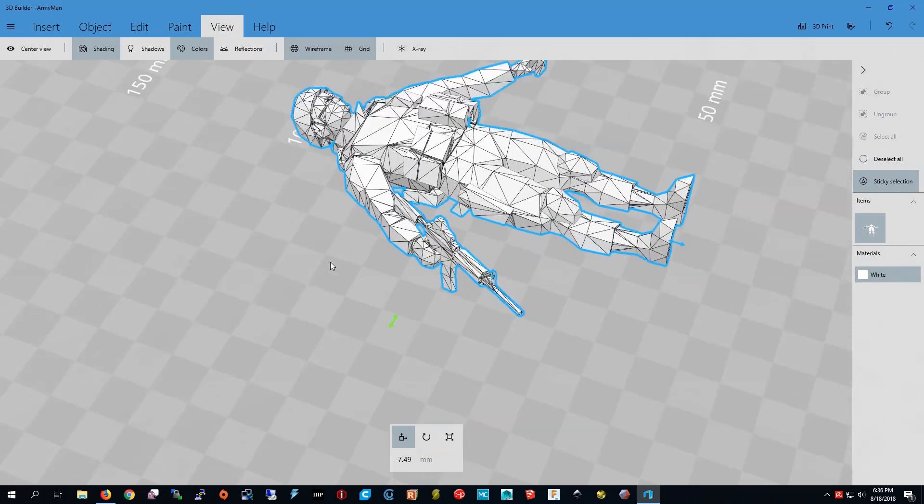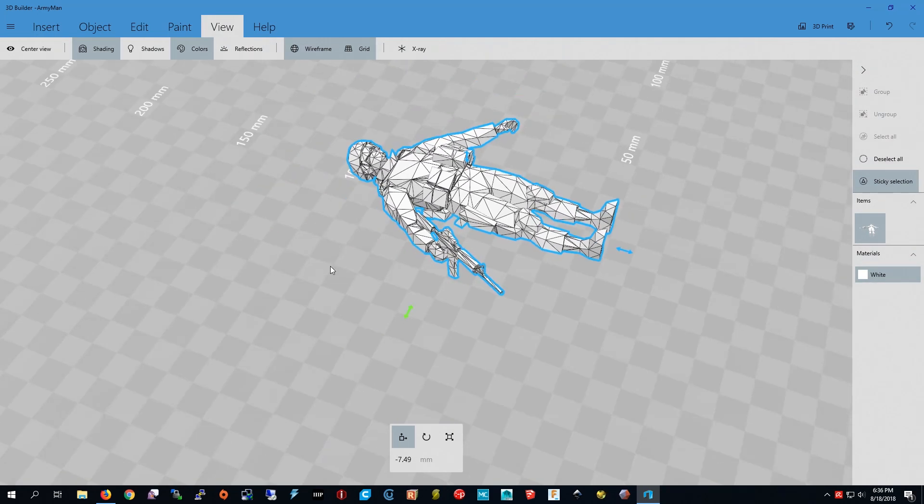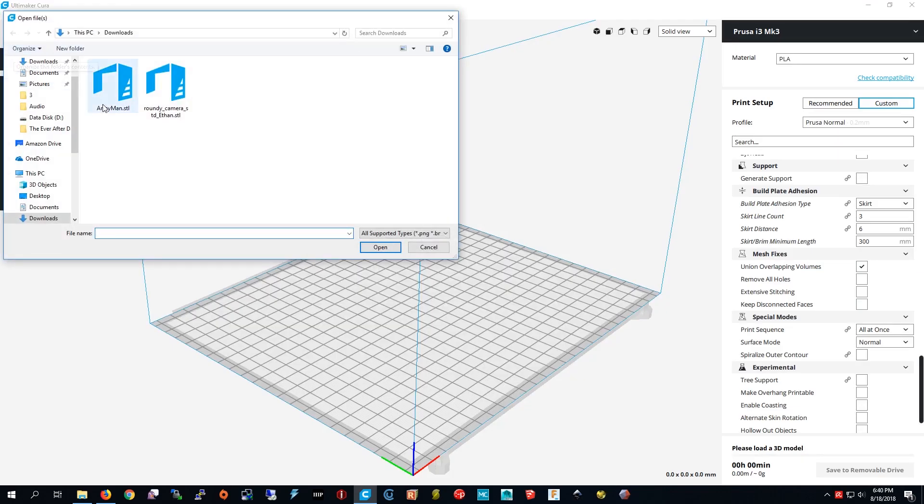I'm going to need to save it and slice it so I can 3D print it. So I'm putting the army man on the slicer.